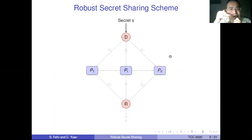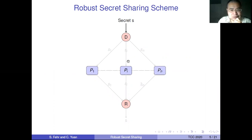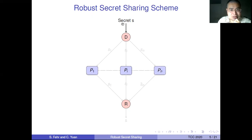Besides this T,N secret sharing scheme, we want the secret sharing scheme to be robust. Look at this graph: we have an honest dealer D, an honest reconstructor R, and N parties P1 to PN. The dealer D first takes an input secret S, then generates N shares for N parties. Each party receives a share. And the adversary can corrupt parties.